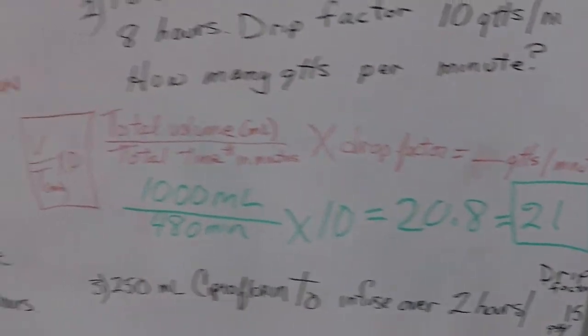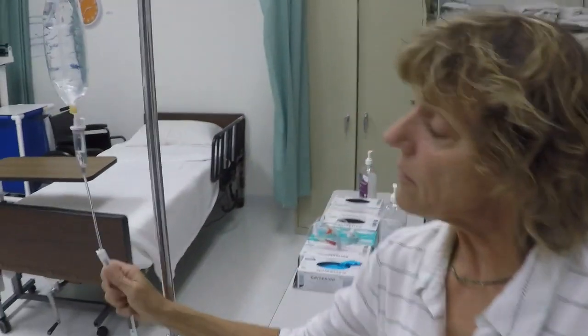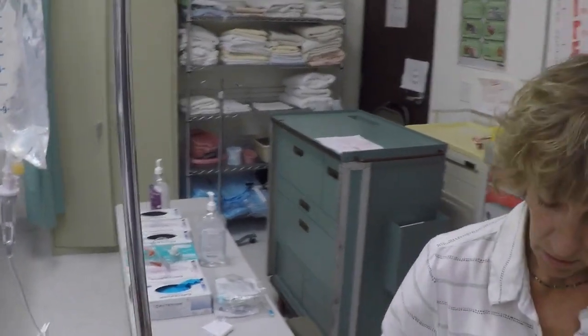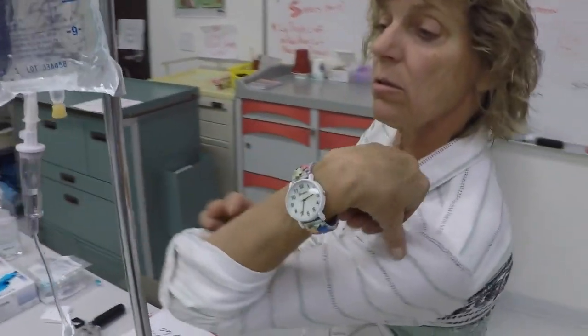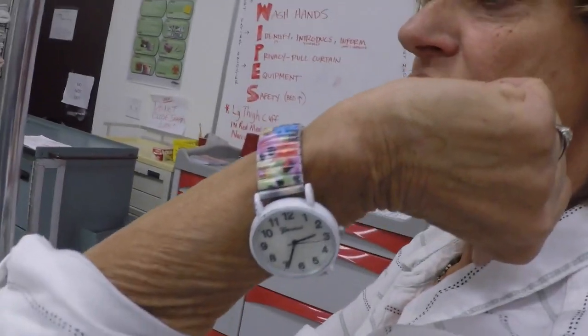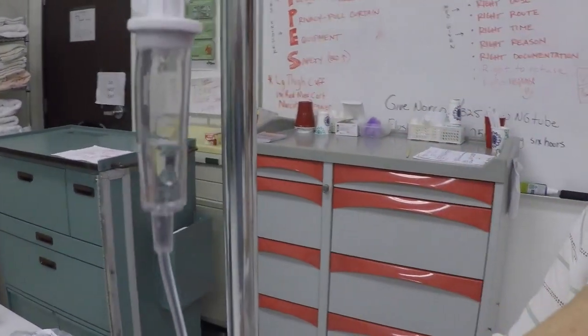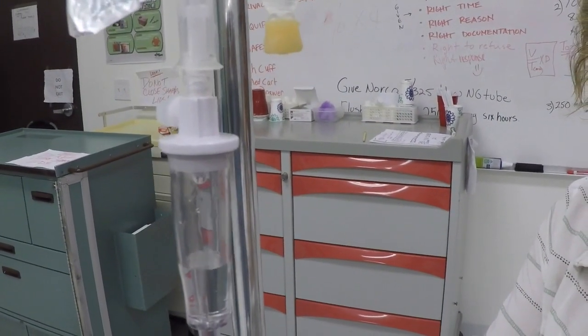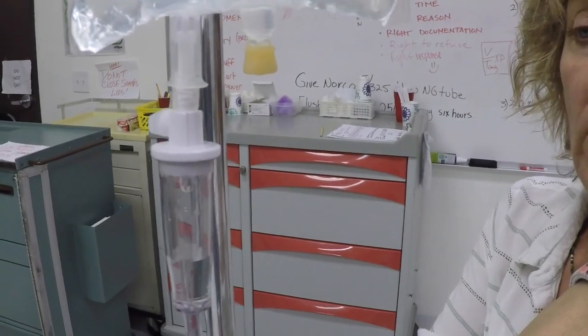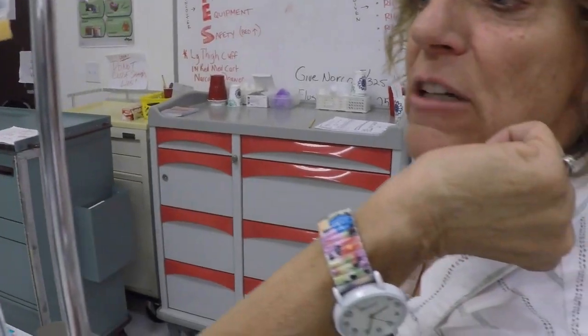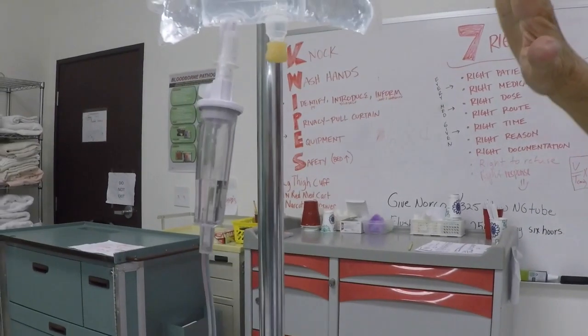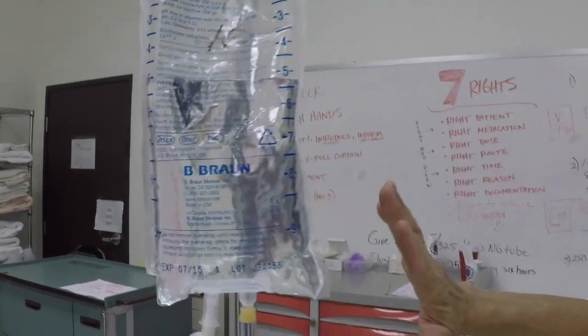So I'm going to come back over here to the bag and then what I would need to do is to watch my watch and then I'm going to watch how fast it's dripping and I want to set this up so it's dropping at about 21 drops per minute. If I do that it's going to deliver this thousand ml in eight hours.